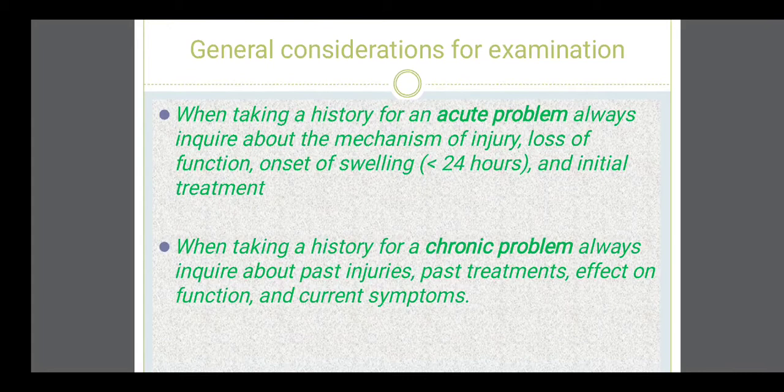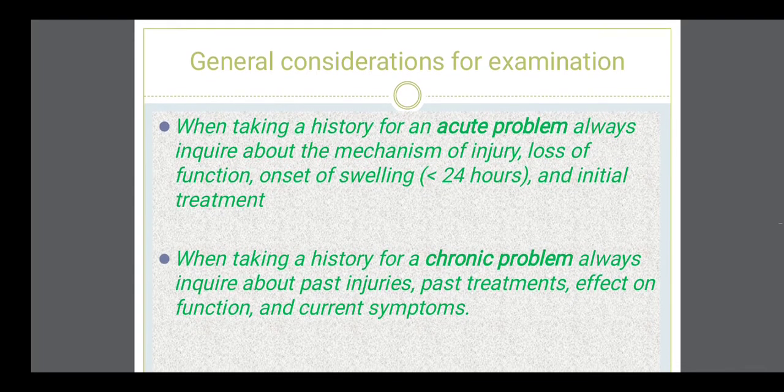When taking a history for an acute problem or acute injury of the musculoskeletal system, we have to ask about the cause of injury, how the injury occurred, the loss of function due to the injury — that is, what the patient is not able to perform — and the onset of swelling.